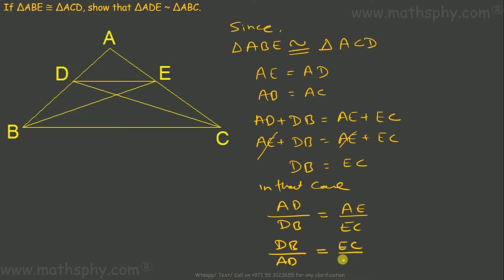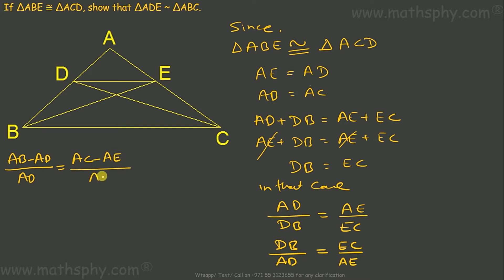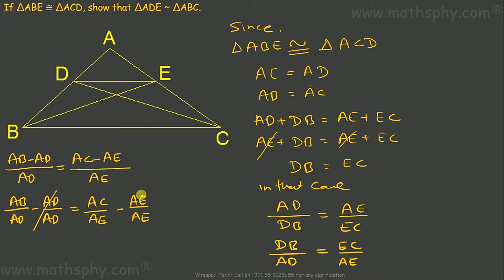So AD over DB equals AE over EC. Now DB can be written as AB minus AD, and EC can be written as AC minus AE. So (AD plus DB) over AD equals (AE plus EC) over AE, which gives AB over AD minus 1 equals AC over AE minus 1. The negative ones cancel, so finally AB over AD equals AC over AE.